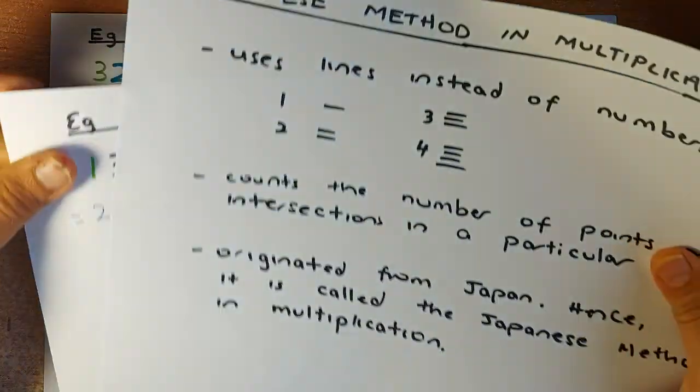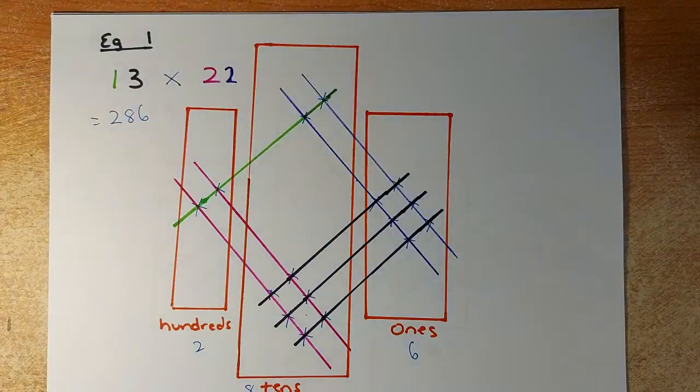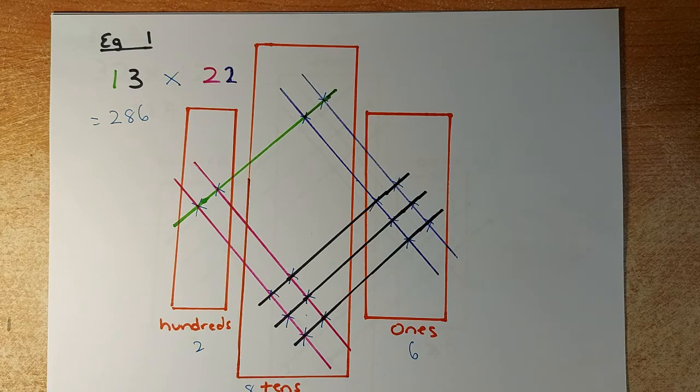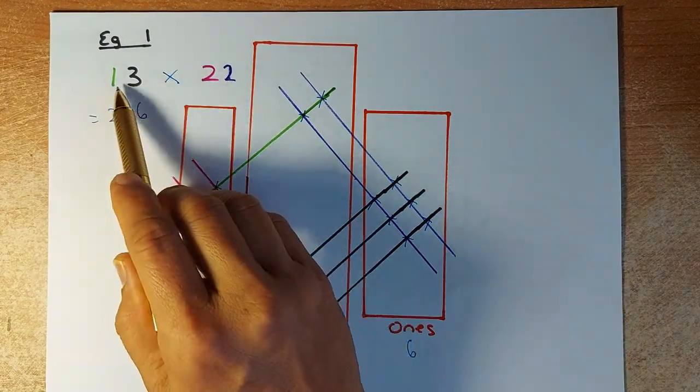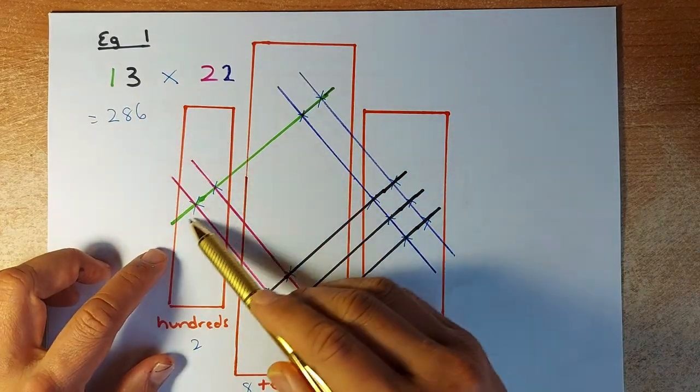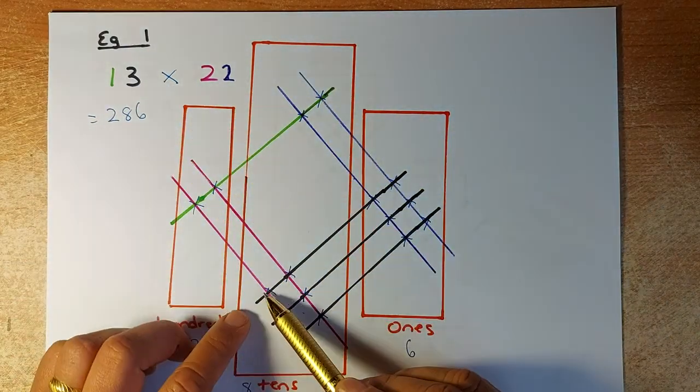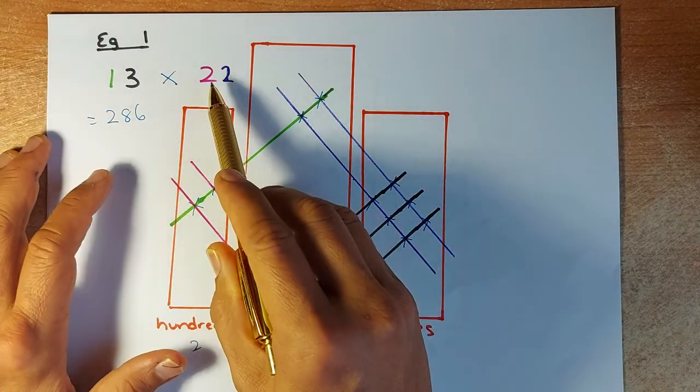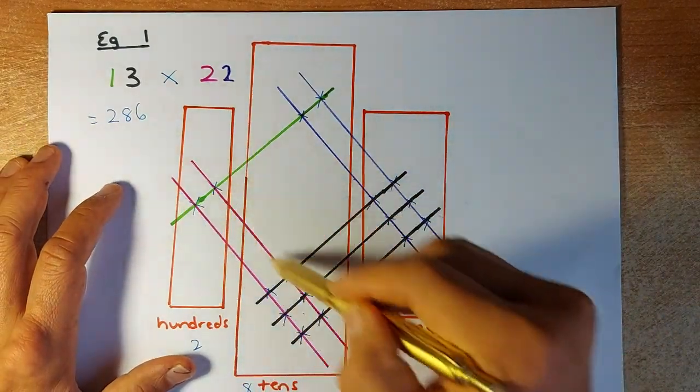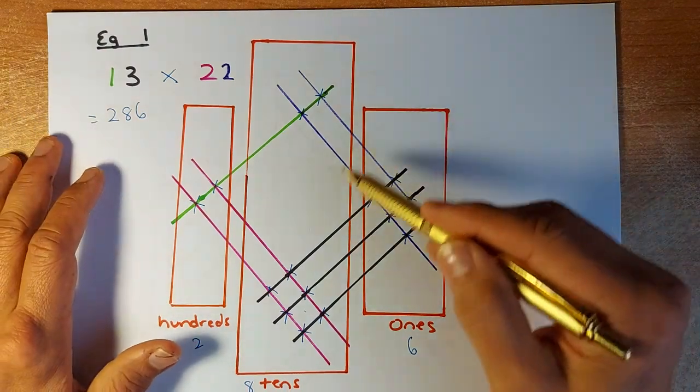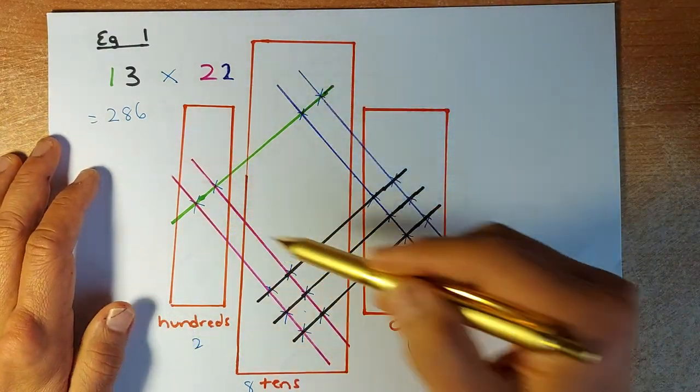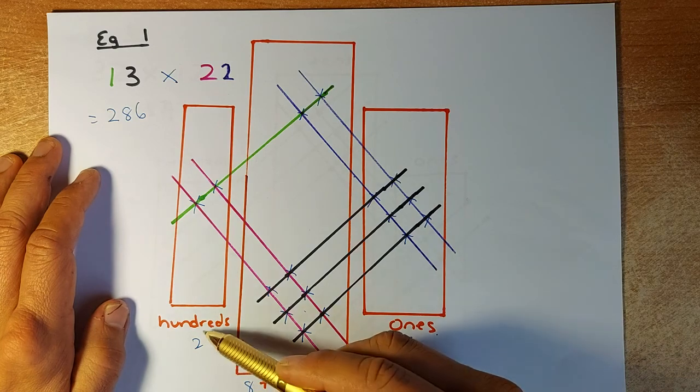The first example is 13 multiplied by 22. 13 means 1, 3 multiplied by 2, 2. So the first 1 will be 1 green line, 3 black lines, and we diagonalize it. Then 2 pink lines and 2 purple lines. Now the next step, we're going to divide into 3 separate regions: the ones, the tens, and hundreds.